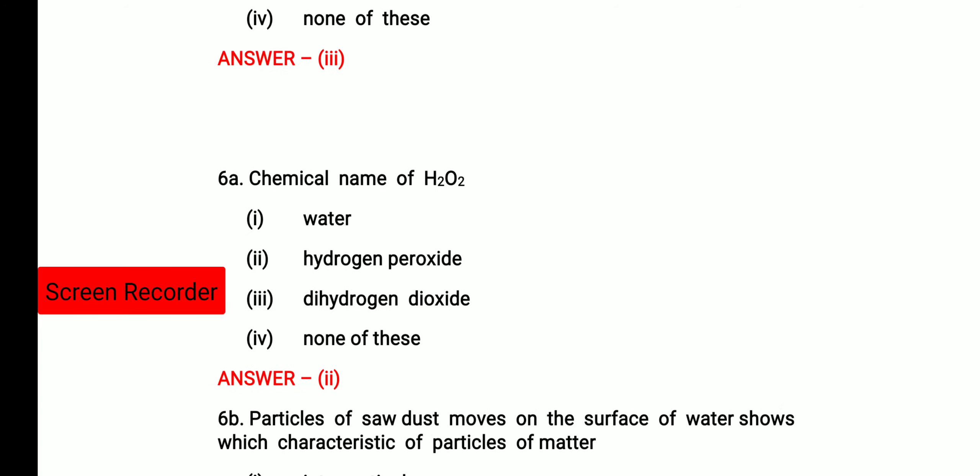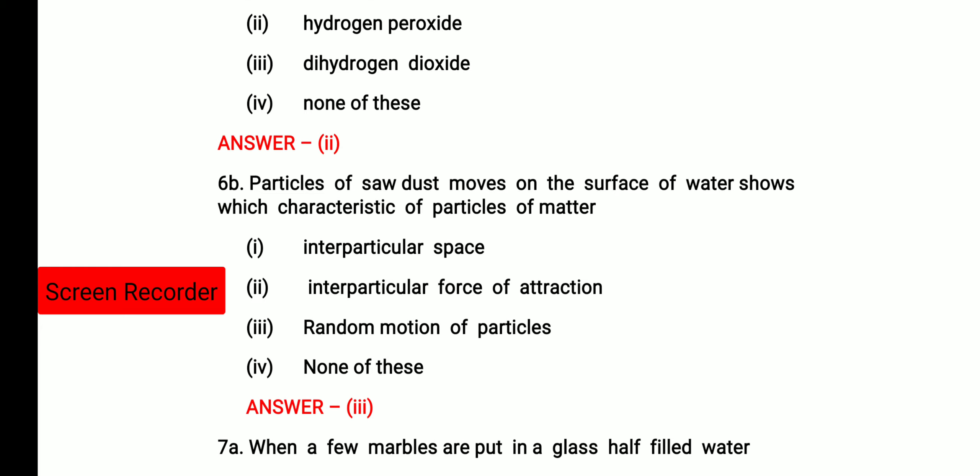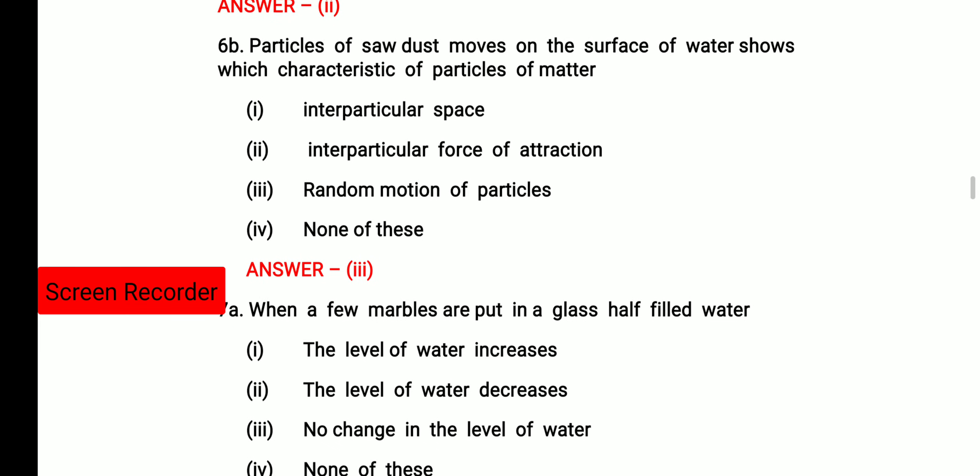Next question was chemical name of H2O2. So chemical name of H2O2 is hydrogen peroxide. Then particles of sawdust moves on the surface of water, show which characteristic of particles of matter. It is showing the random motion of the particles because these sawdust particles will be shown drifting away from each other.